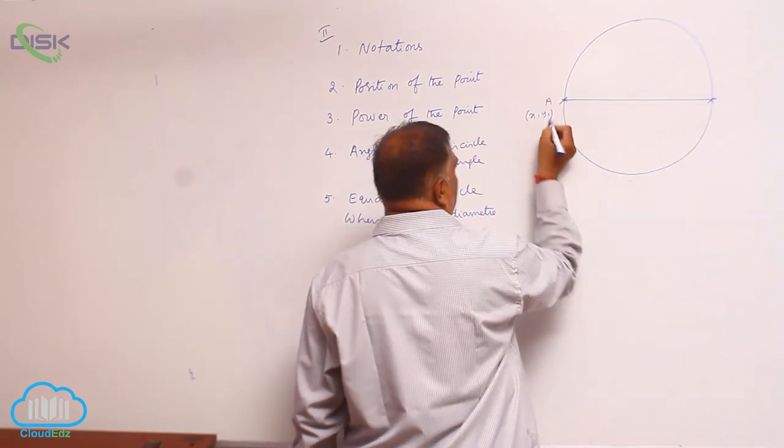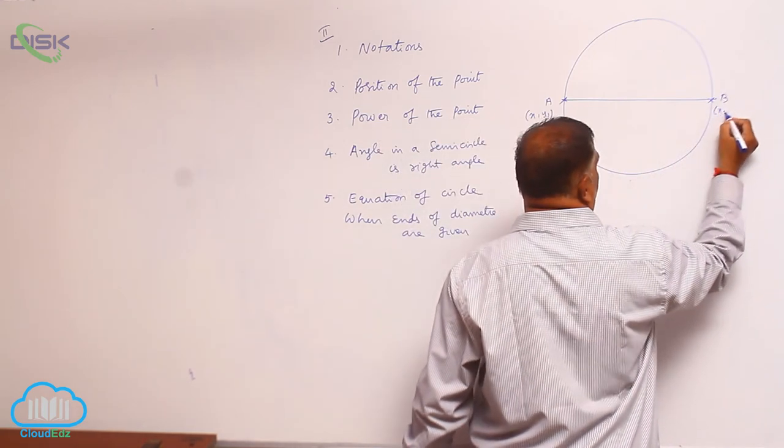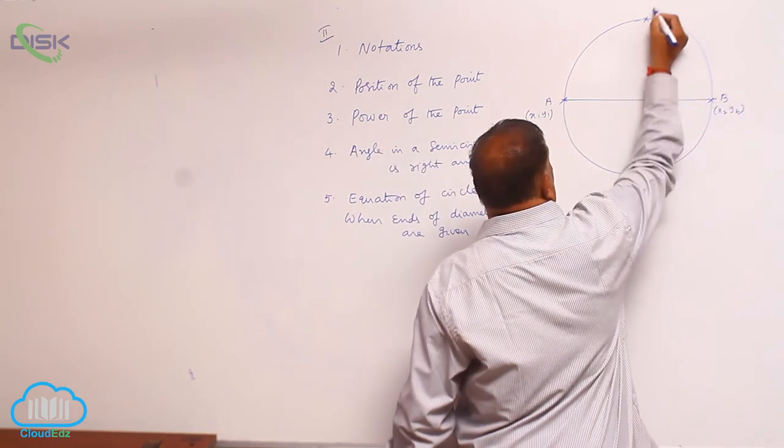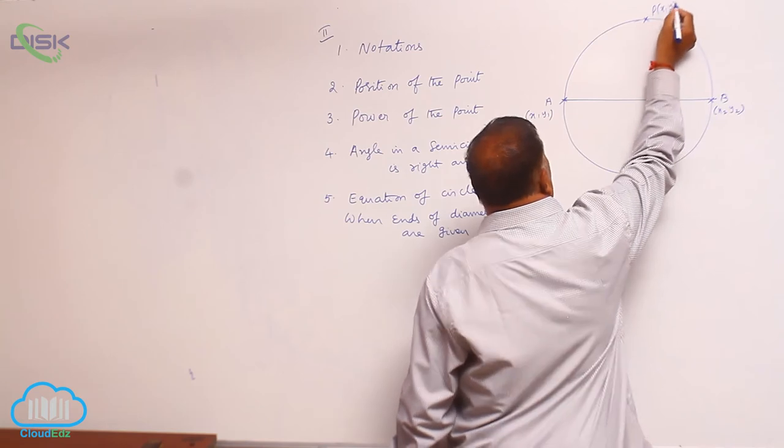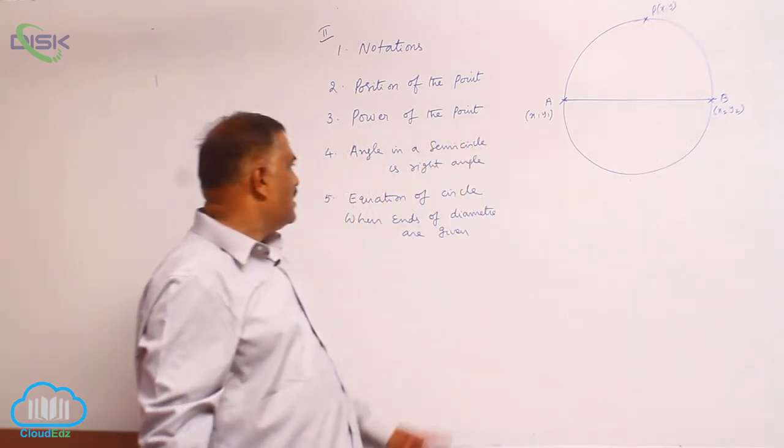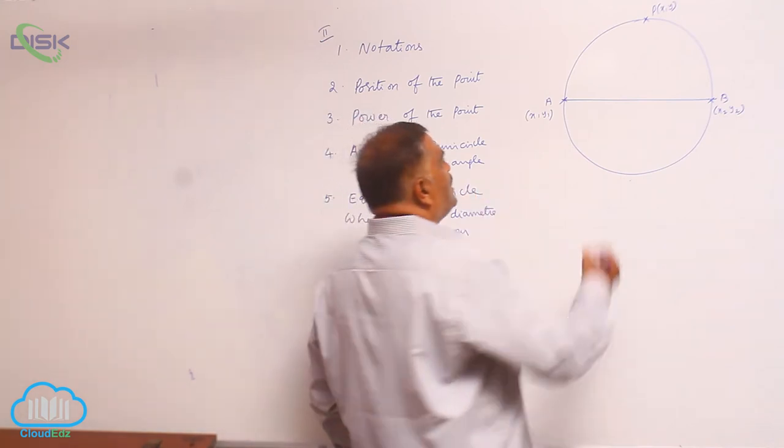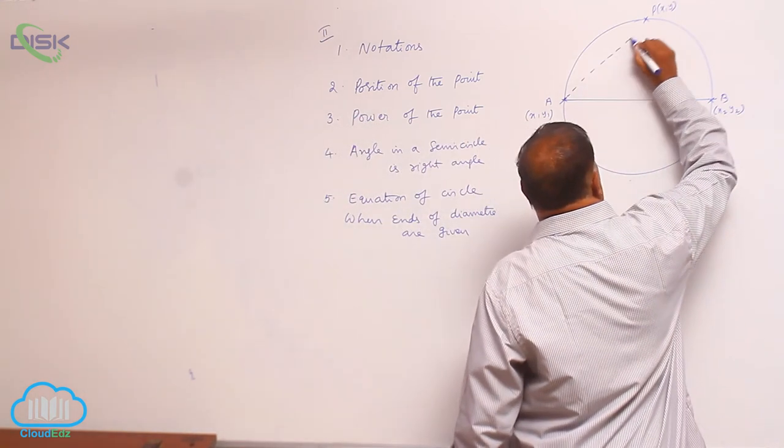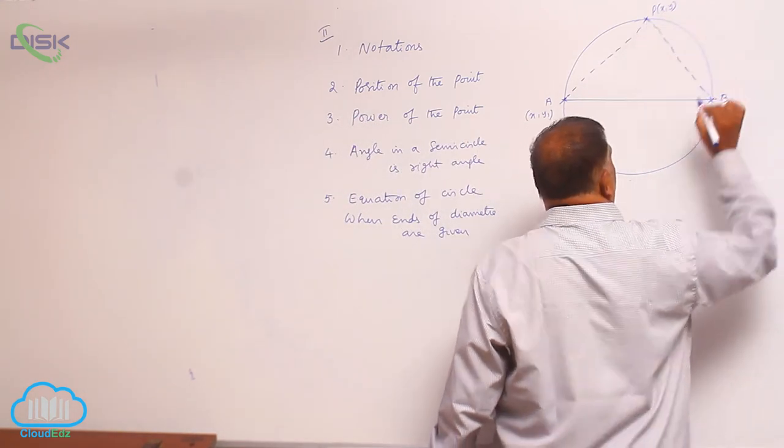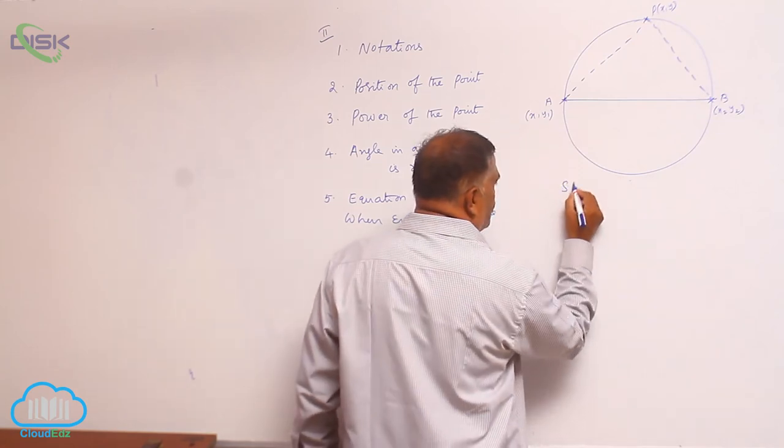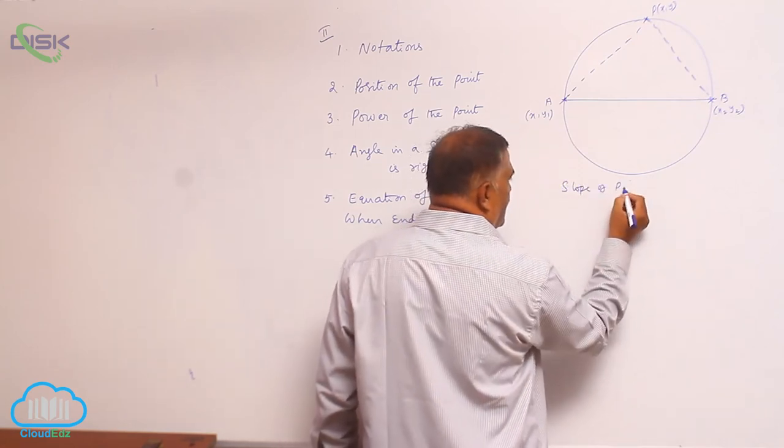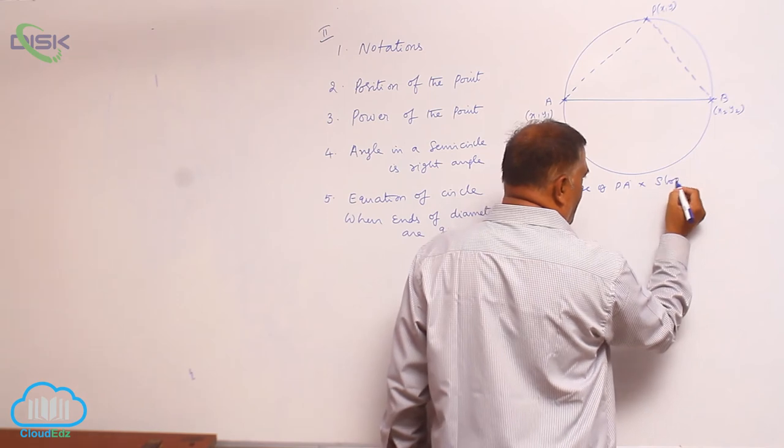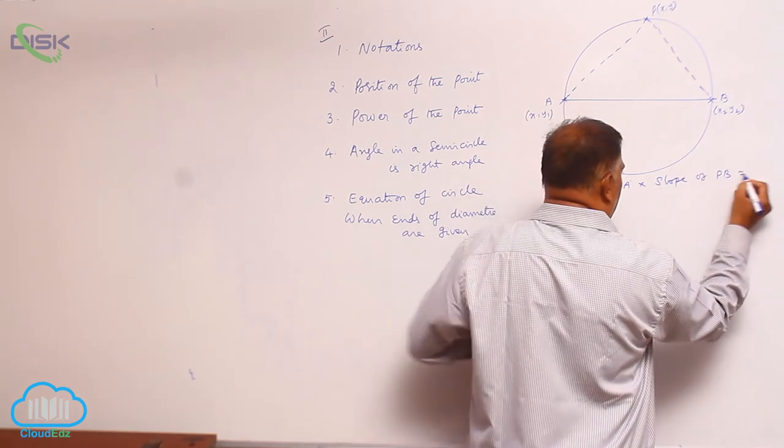With endpoints of diameter are given: A(x₁, y₁), B(x₂, y₂) are endpoints. Let us consider P(x, y). Previously we discussed that angle in a semicircle is 90 degrees. So let us consider join these two points and you can write that slope of PA into slope of PB is equal to minus 1.